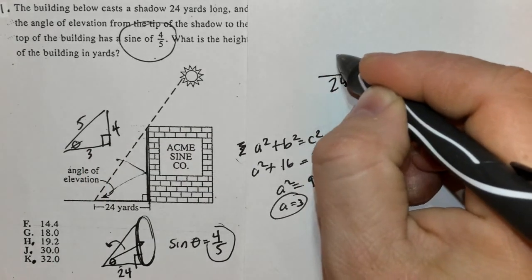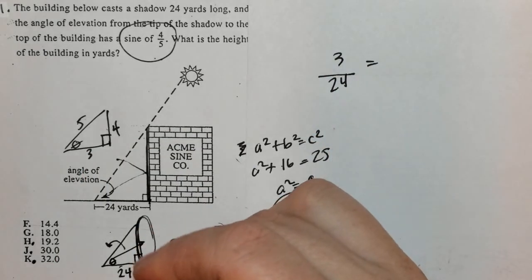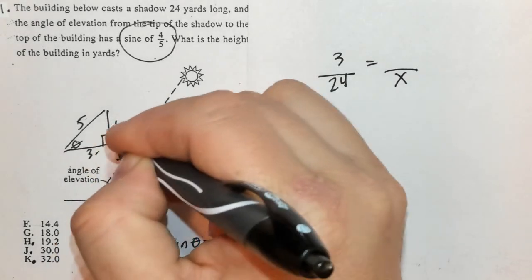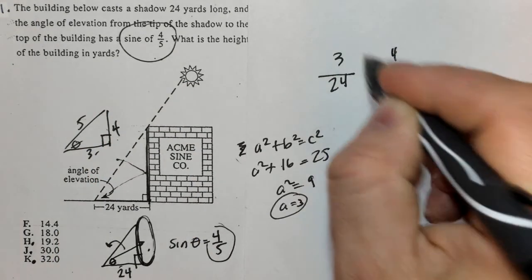And I want to know this length, so it's the larger triangle, I want to know this length, and I know on the similar triangle it is 4. I can cross-multiply.